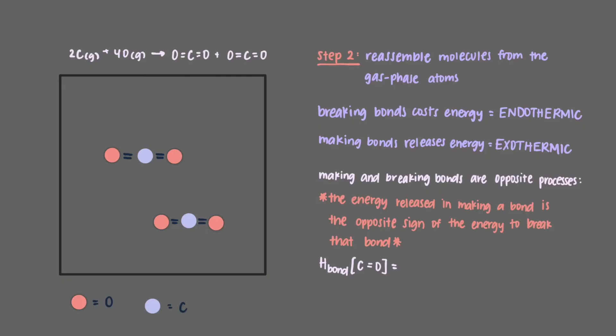The bond enthalpy of the carbon-oxygen double bonds in carbon dioxide is 799 kilojoules per mole. That means that it would take 799 kilojoules to break 6.022 times 10 to the 23rd carbon-oxygen double bonds, which means that 799 kilojoules of energy are released when that many bonds are made.